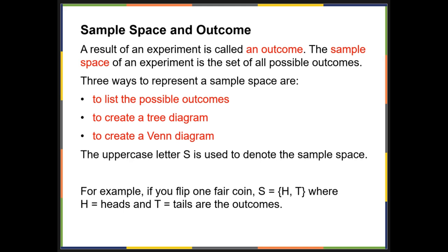They are: to list all the possible outcomes, to create a tree, or a Venn diagram. We use the uppercase letter S to denote the sample space. For example, if you flip a fair coin, the sample space equals all of our possible outcomes, which would be heads or tails.